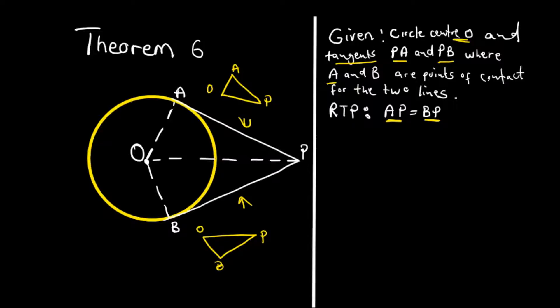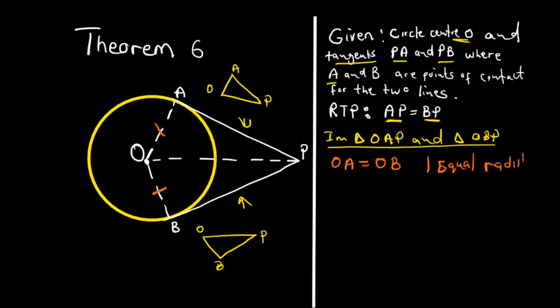By doing so, we will be proving that AP equals PB. So now, in triangle OAP and triangle OBP, we know that OA is equals to OB. This is equal to that, reason being equal radii, so they are both the radius of the circle.